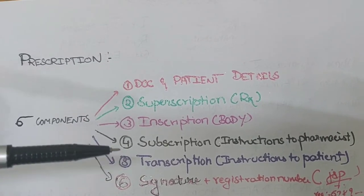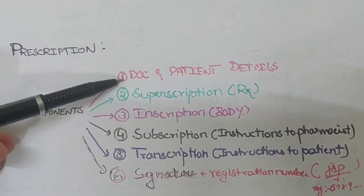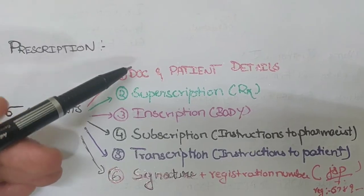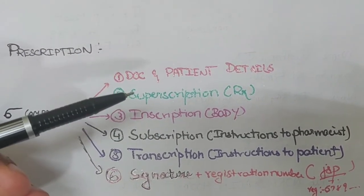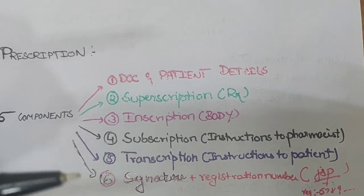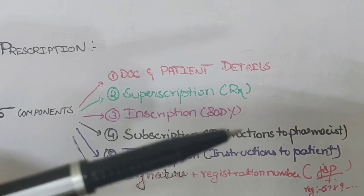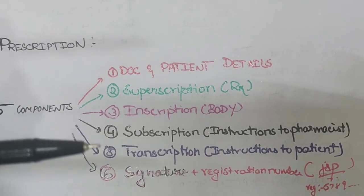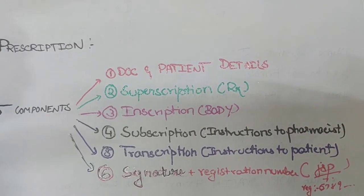The format consists of six components that should be followed by any doctor for prescribing drugs. The first essential component is doctor and patient details, which should be written on the top right corner. Details like doctor's name, recognized qualifications, address, and telephone number should be written. The date and place of the prescription are also written on the right side, along with patient details like name and address.